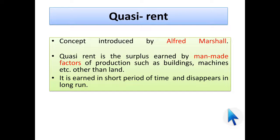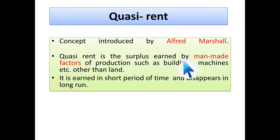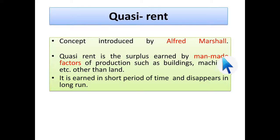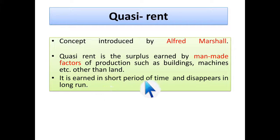Quasi rent is a concept introduced by Alfred Marshall. Quasi rent is the surplus earned by man-made factors — like buildings and machines — which are other than land, because land is not man-made. So apart from land, whatever you are using, those are man-made factors, and rent for those factors is called quasi rent. It is earned in the short period of time and disappears in the long run, because only land lives for the long run.